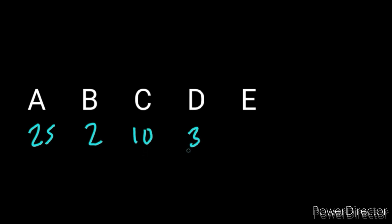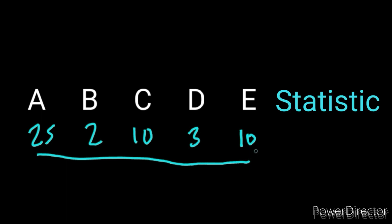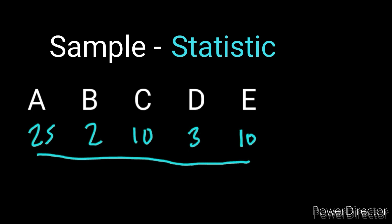We can do statistics on those 50 students, and the answer we get we will use to represent the population. Among these five products, let's say 25 students preferred product A, 2 preferred product B, 10 preferred product C, 3 preferred product D, and 10 preferred product E. This is called a statistic — the results we get based on a sample.